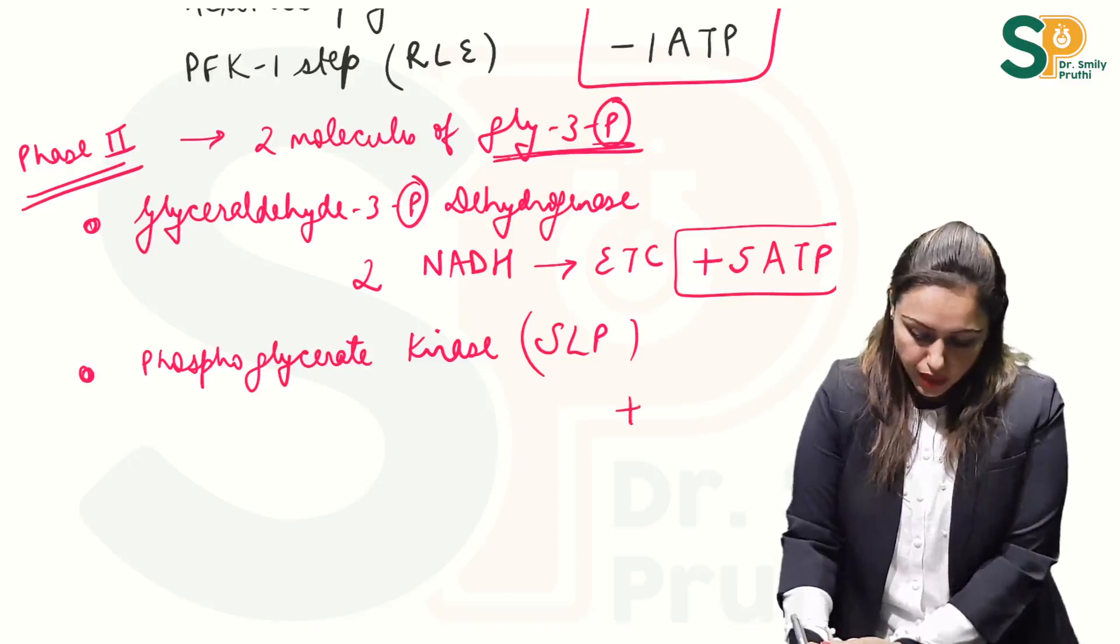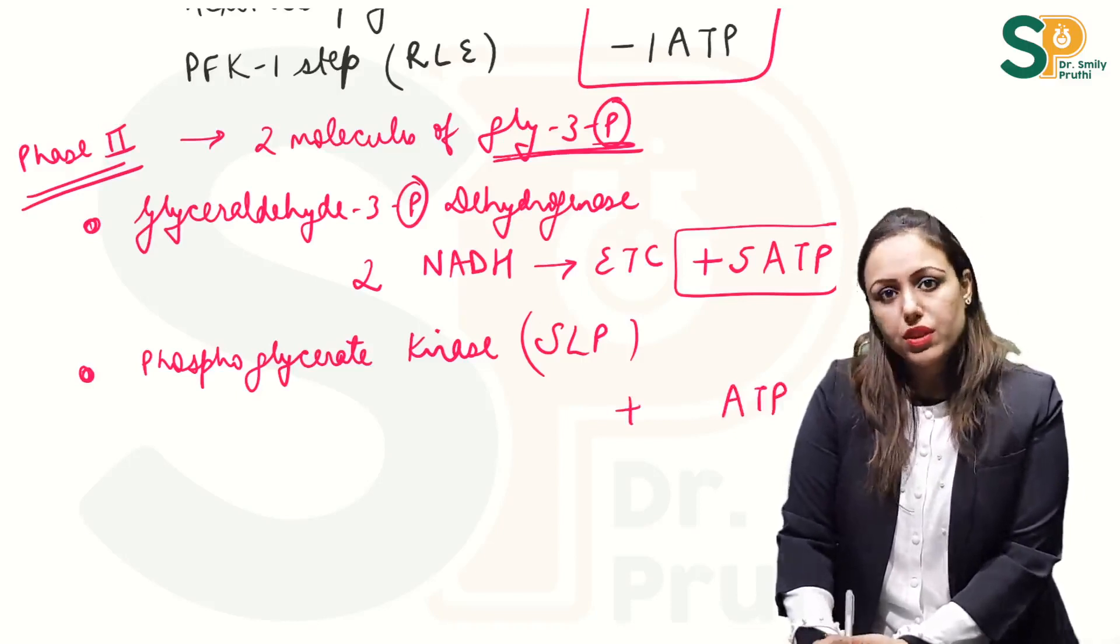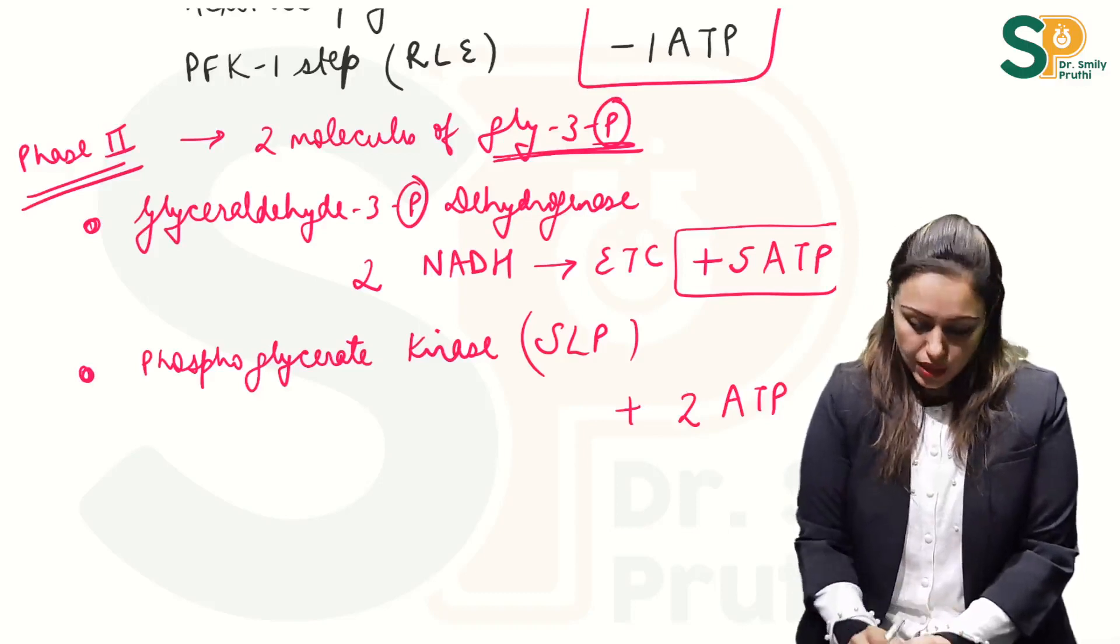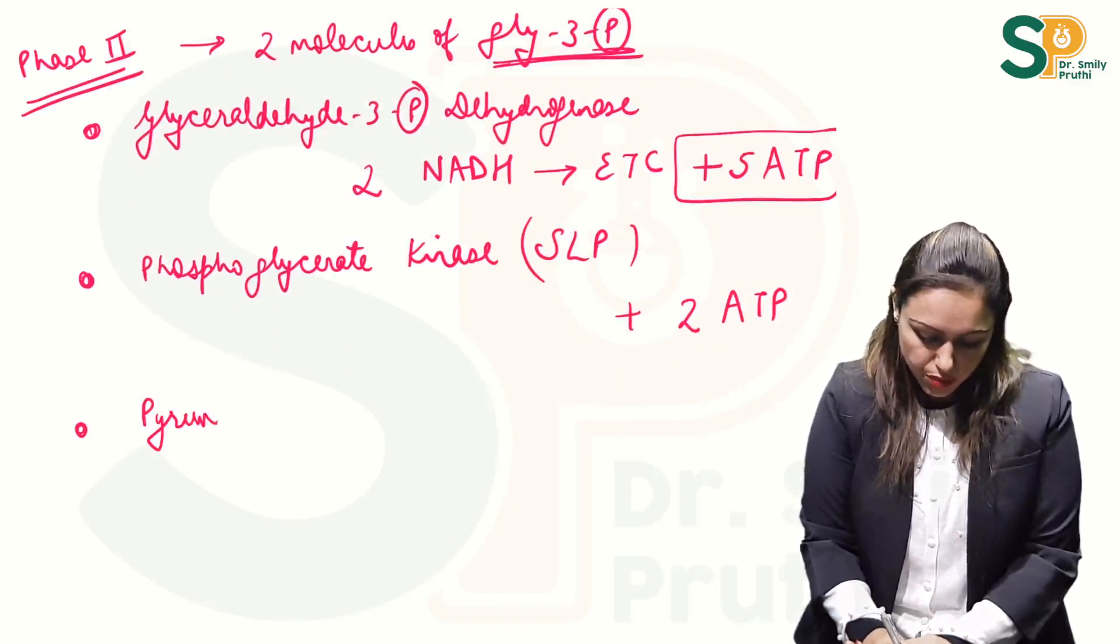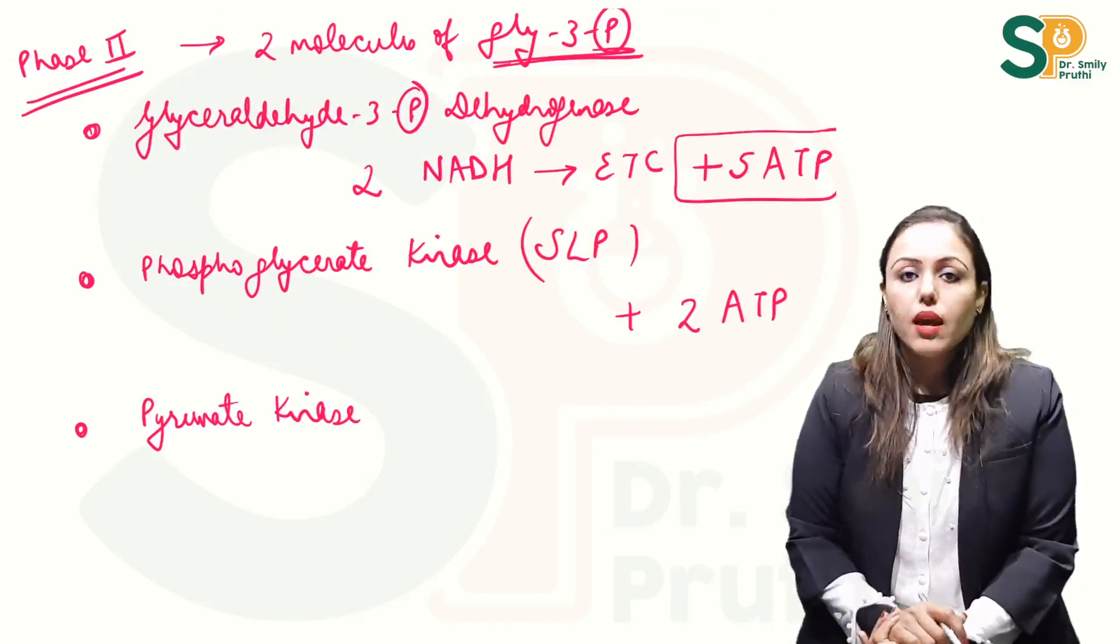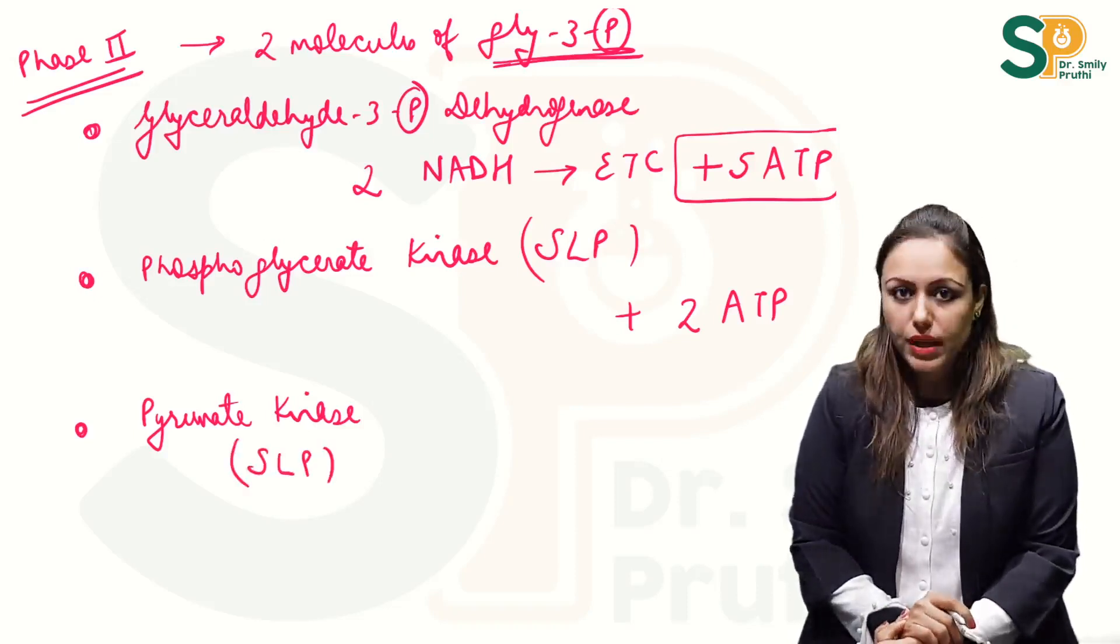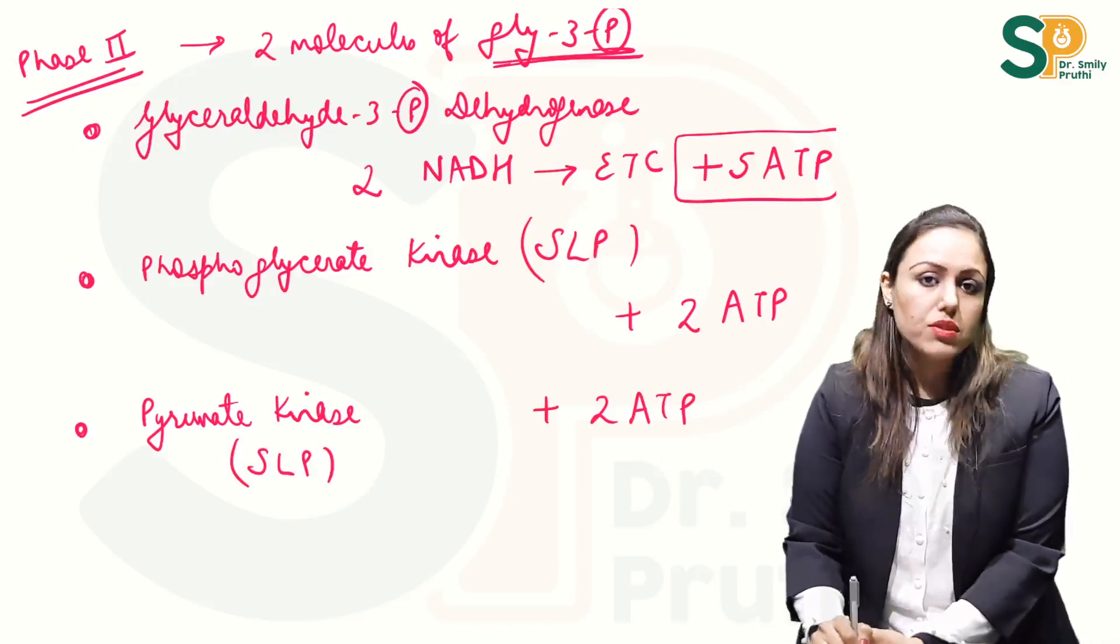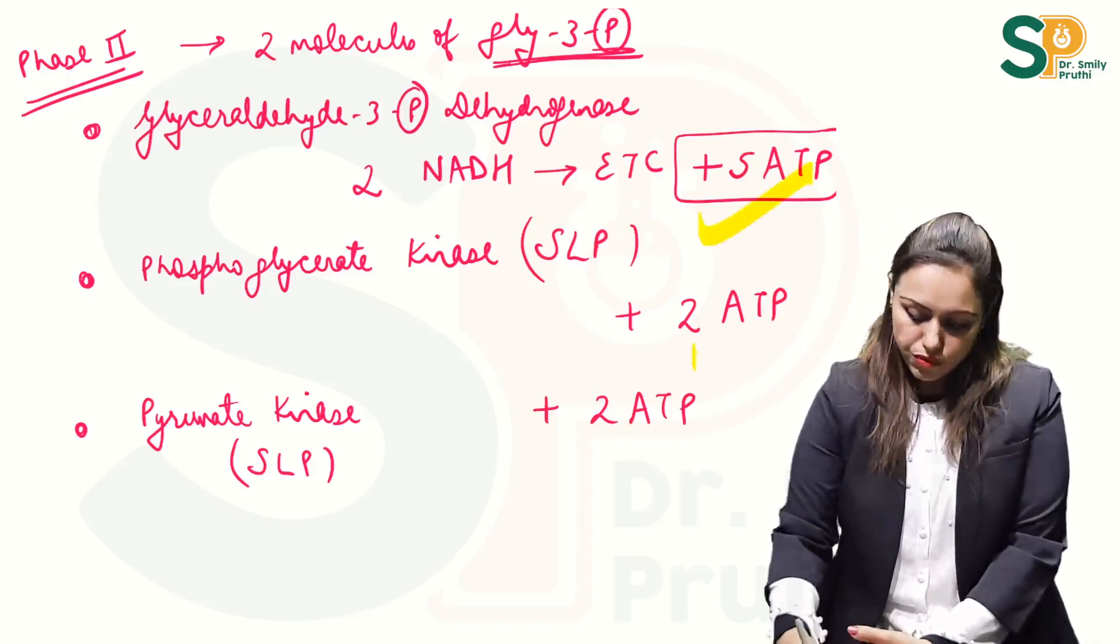So I will write plus but I told you in phase two everything is multiplied by two so I will write plus 2 ATP here. Then one last step is catalyzed by enzyme pyruvate kinase enzyme and this is also one of the substrate level phosphorylation steps of glycolysis and this step is also producing 2 ATPs.